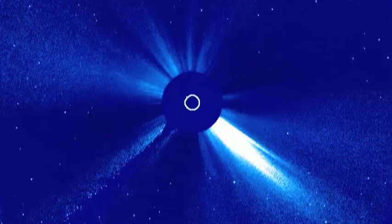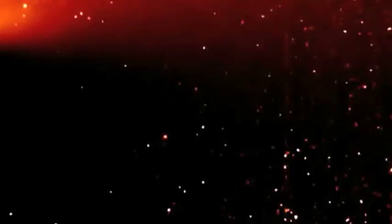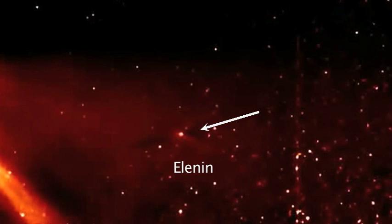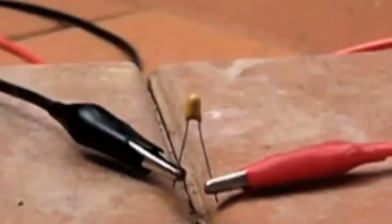When the charged particles of a coronal mass ejection struck the comet Elenin, the oppositely charged nucleus could not withstand the electrical stresses. It disintegrated like an exploding capacitor.